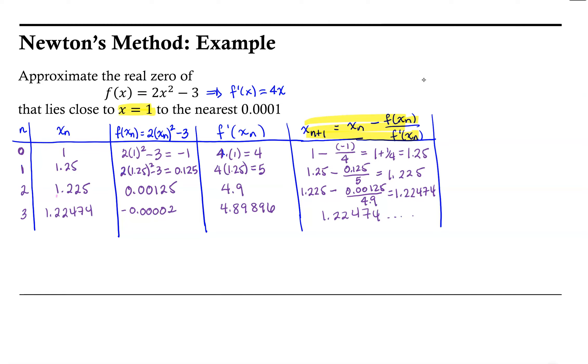So notice at this point our x values are matching to 5 decimal places. And we were asked to find the real zero to the nearest 0.01, which we certainly have done. So we can say that the real zero is approximately 1.22474.